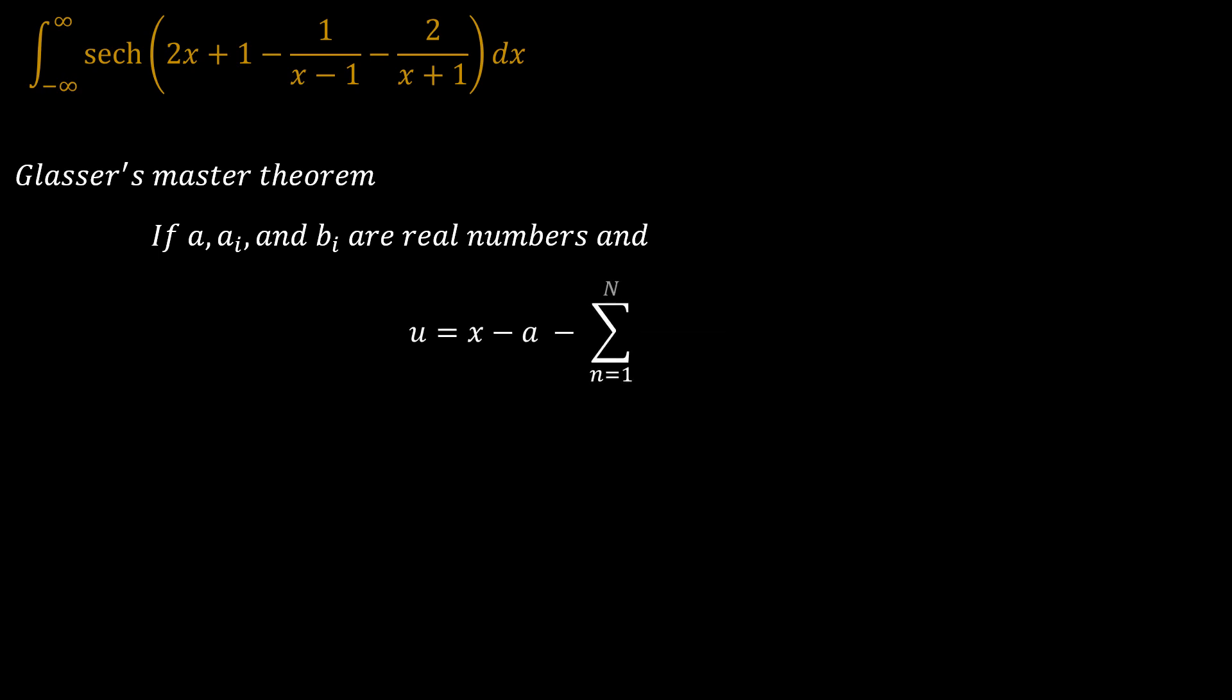When we have this problem, we are going to use what is called Glasser's Master Theorem, which states that if you have a_i and b_i that are real numbers, and then we have an expression u which equals the variable x minus the real number a minus the summation of the absolute values of a_i over x minus b_i.